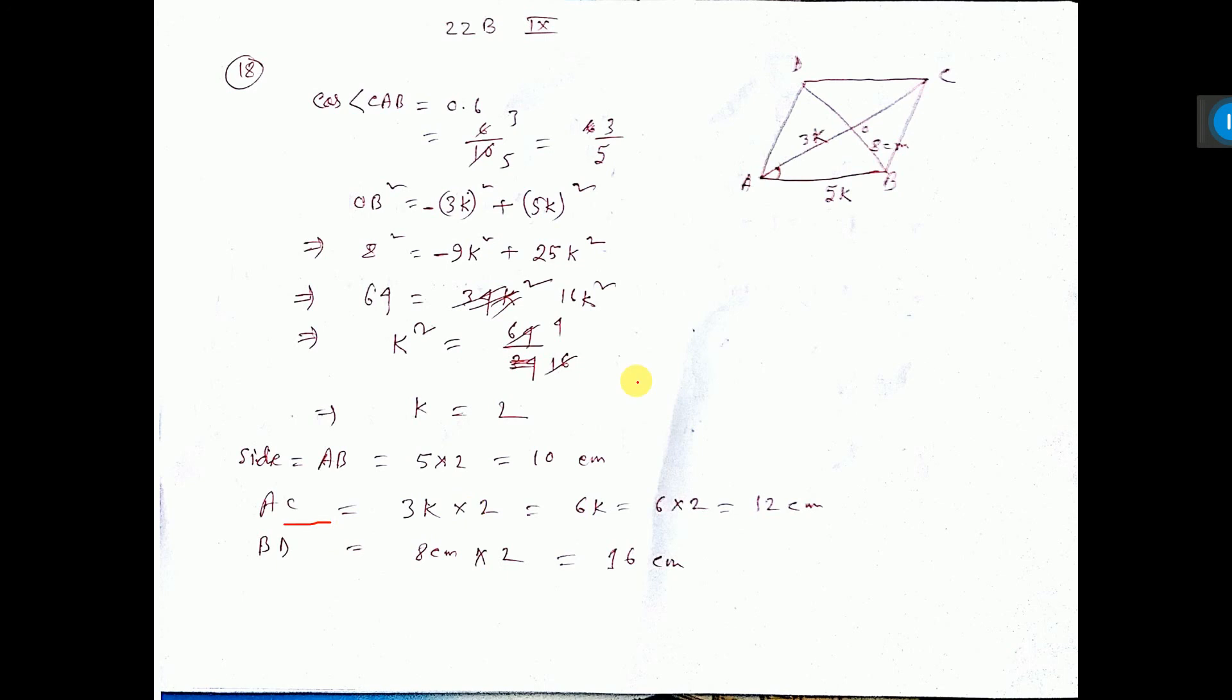Here AC means this 3K, here also 3K. OC 3K, so total 6K, that is into 2, 6K. So K value we have got, so 6 into 2, that is 12 cm. This is AC length.